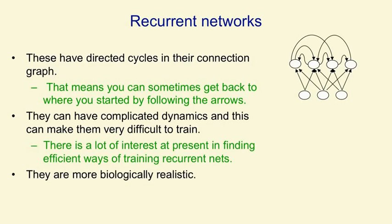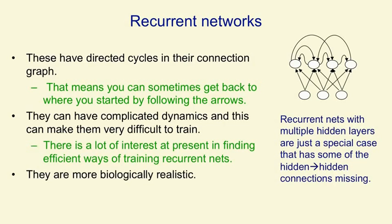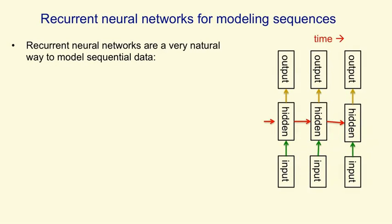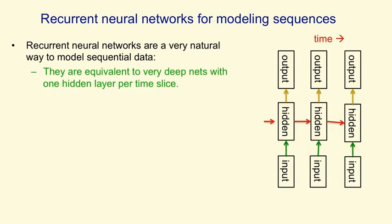They're also more biologically realistic. Recurrent neural networks with multiple hidden layers are really just a special case of a general recurrent neural network that has some of its hidden-to-hidden connections missing. Recurrent neural networks are a very natural way to model sequential data. We have connections between hidden units, and the hidden units act like a network that's very deep in time. At each time step, the states of the hidden units determines the states of the hidden units at the next time step.